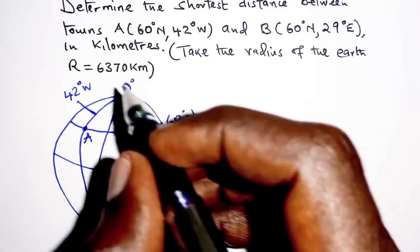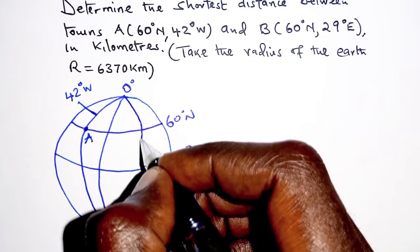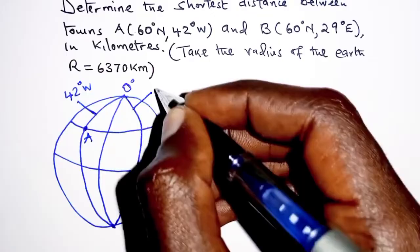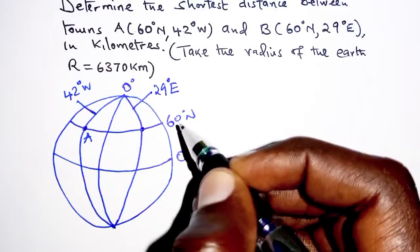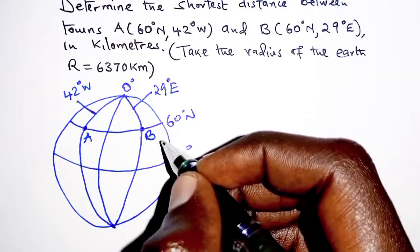For town B: it lies on the same latitude, 60 degrees north, but 29 degrees east of the prime meridian. Where longitude 29 degrees east and latitude 60 degrees north meet is the location of town B.